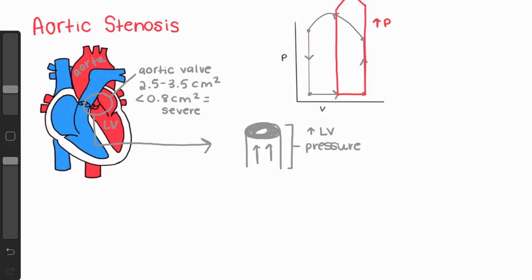The left ventricle compensates for the decreased stroke volume that's caused by the increased afterload with concentric hypertrophy. So we get a thickened ventricle wall with decreased compliance and smaller chamber size.